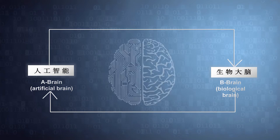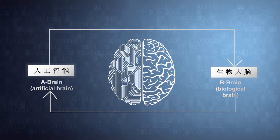That's what we call the AB Brain Project. A is artificial brain, B is biological brain. We learn from the biological brain to develop artificial intelligence, and use our cutting-edge AI technology to understand our brain.